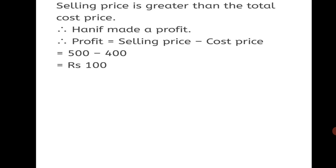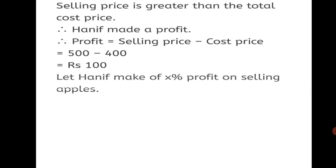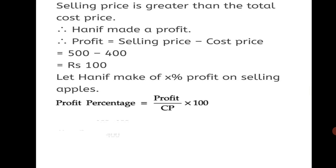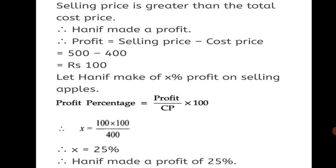Now we have to find the profit percentage. Let Hanif make X percent profit on selling apples. Profit% = (Profit / CP) × 100, so X = (100 / 400) × 100. Reducing zeros: 100 ÷ 4 = 25. So X = 25%. Hanif made a profit of 25%. This way we have solved Practice Set 33.